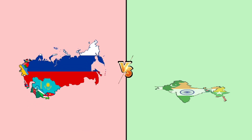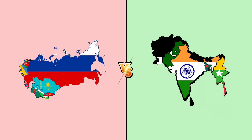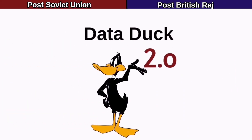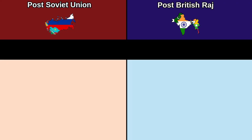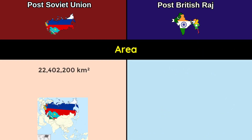Hello guys, today we look at post-Soviet Union versus post-British Raj. Some South Asian countries are not part of the British Raj — they are separate colonies or independent kingdoms. Especially Sri Lanka, which was not part of the British Raj; it was a separate colony named British Ceylon. Welcome to our YouTube channel Data Duck 2.0.